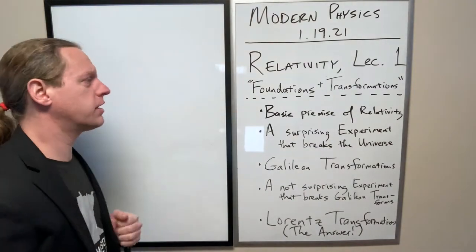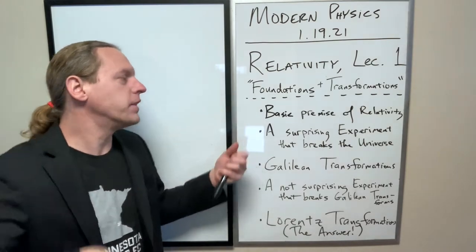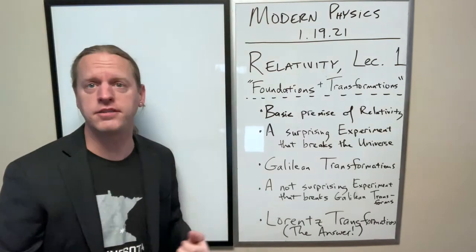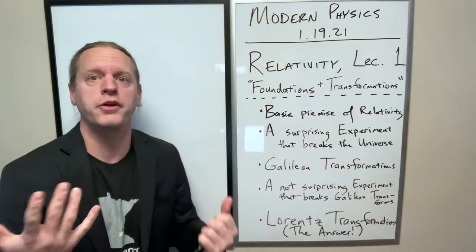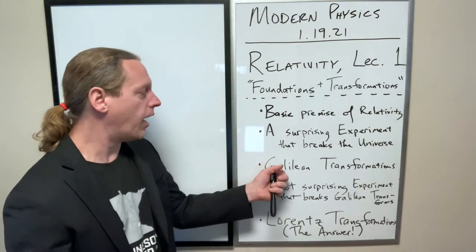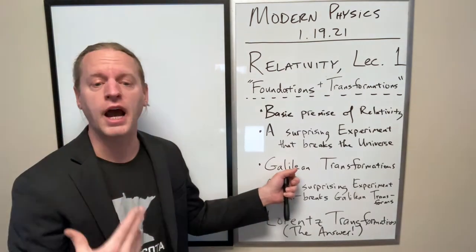So, we'll go through the basic premise or the basic assumptions of relativity, and then from that we're going to talk about one of the experiments that seemingly violates his basic assumptions about how the universe has to work. And that's where things get interesting because from there we introduce a way to reconcile that which we call the Galilean transformations.